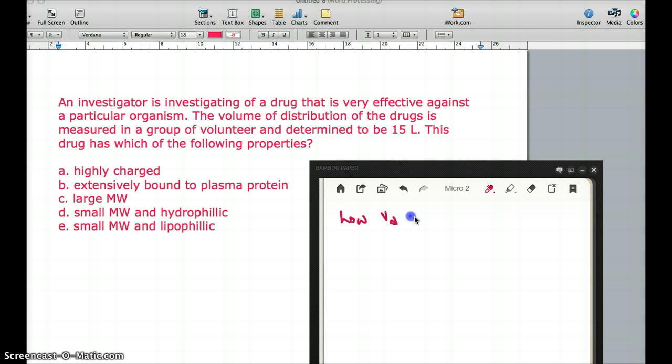a low VD has a distribution of about 4 to 8 liters. But this is 15 liters, which is much higher. So it has to be either medium VD or high VD, depending on what kind of substance it is.